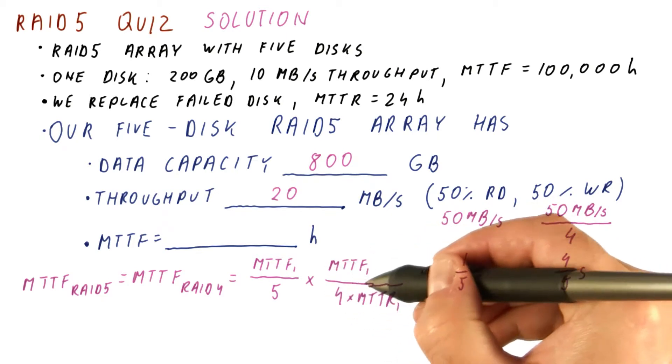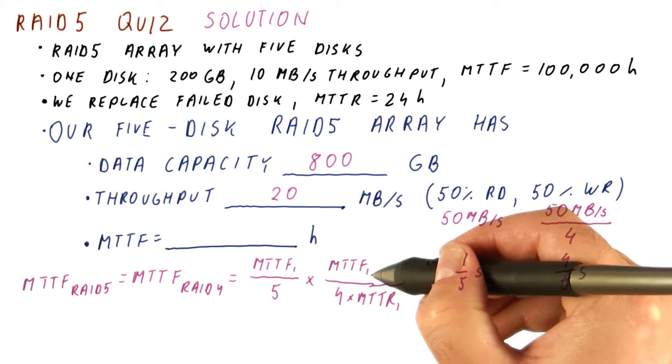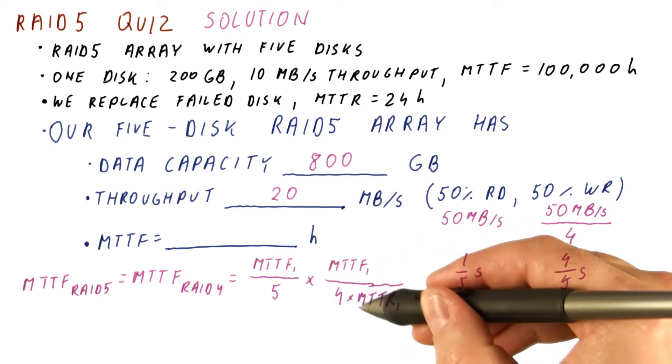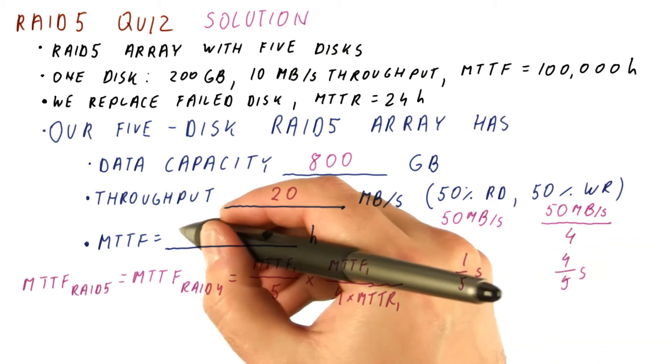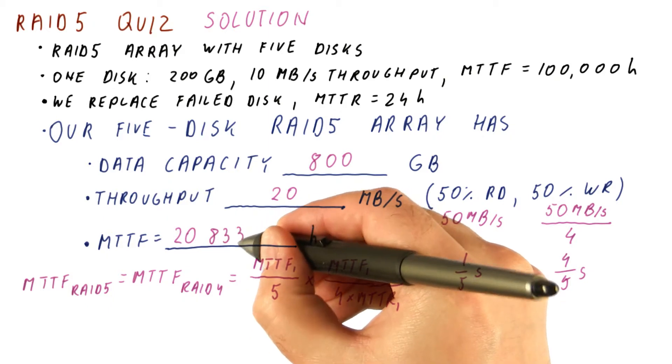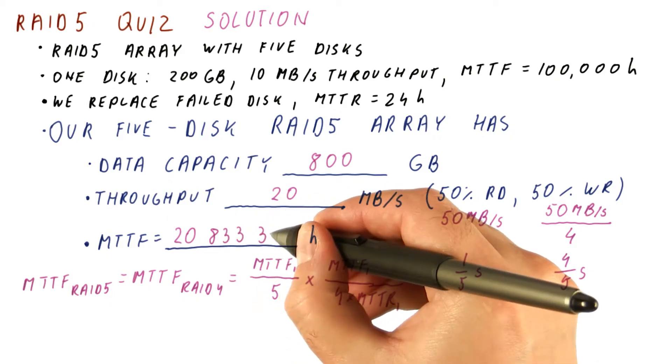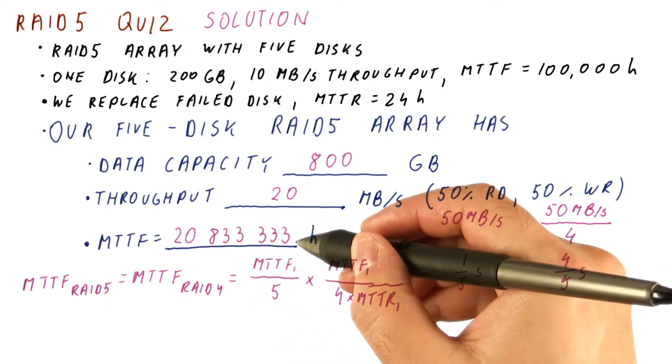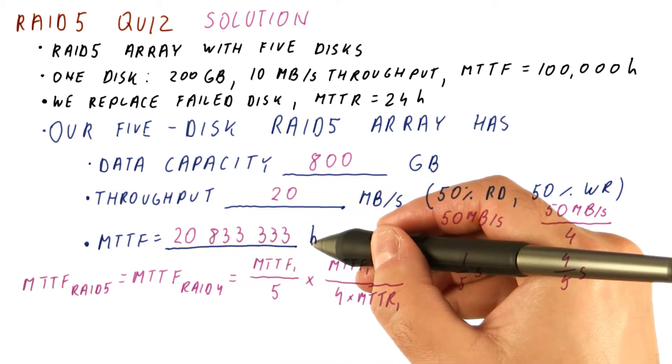So this part here is really the expected lifetime of the four disks left to their own devices, and this is the MTTR. And what we get is the same number here as we did for RAID 4, which is 20,833,333 hours, which is more than 2,000 years again.